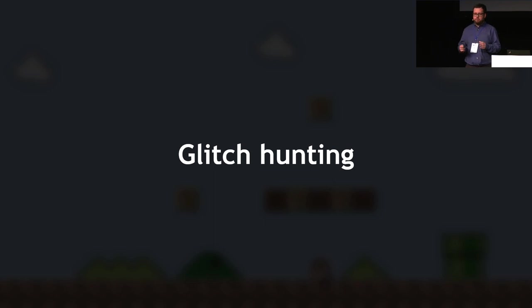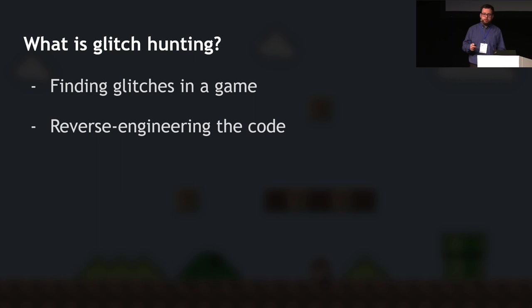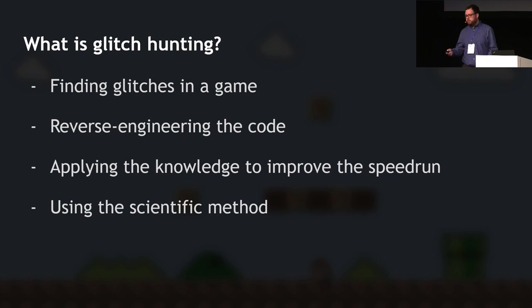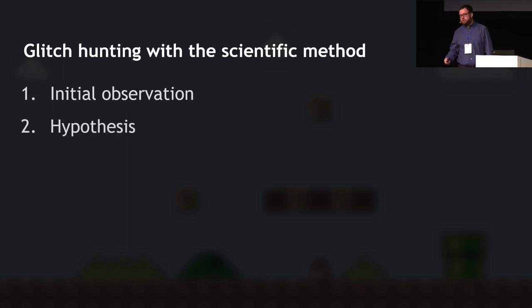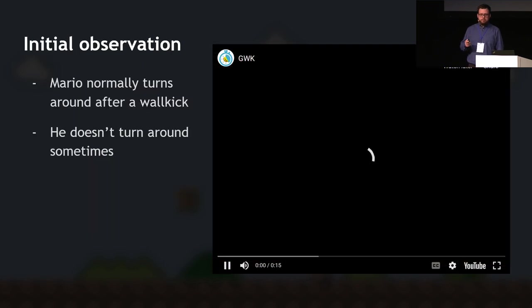To get through all of this, you need to do the glitch hunting part — and this is where the second section comes in: glitch hunting can be more scientific than you think. What is glitch hunting? It's finding glitches in the game by trying to reverse engineer the code through experiencing it. In some much older games the code is completely disassembled, but usually you only have the finished product and you're trying to figure out what's going on. Then you apply that knowledge to improve the speedrun. To do that, you use a scientific method.